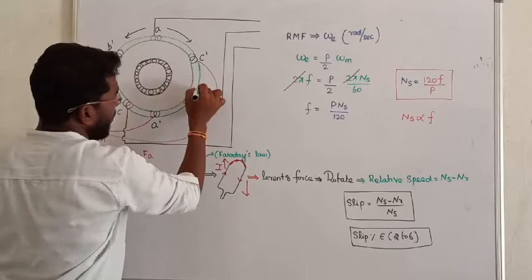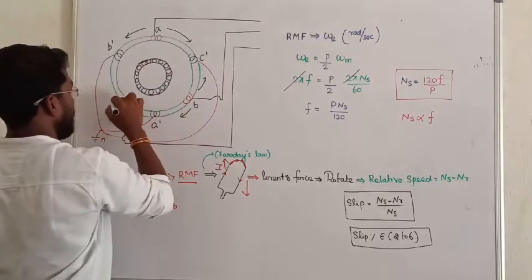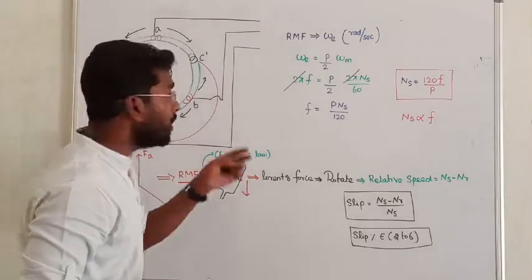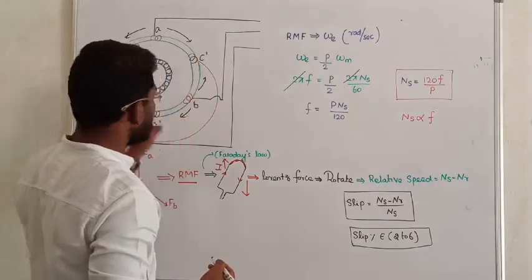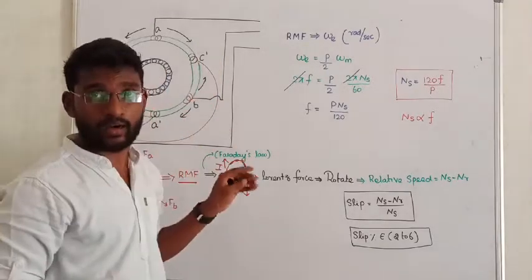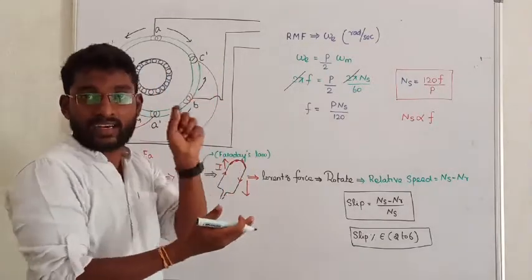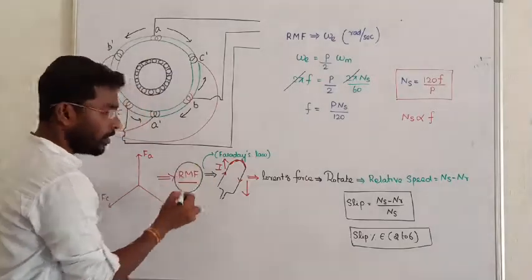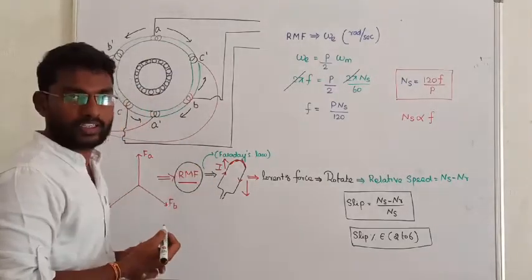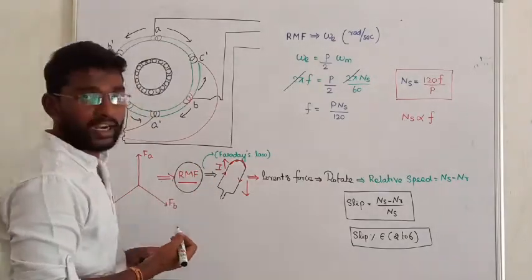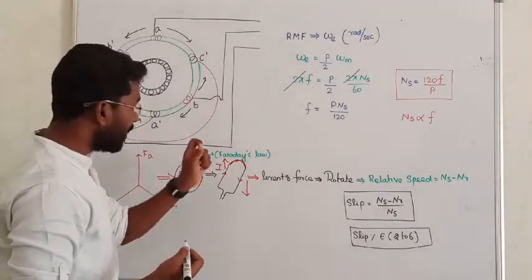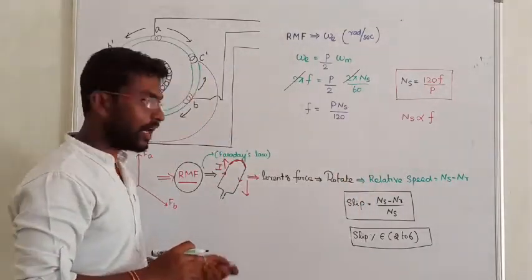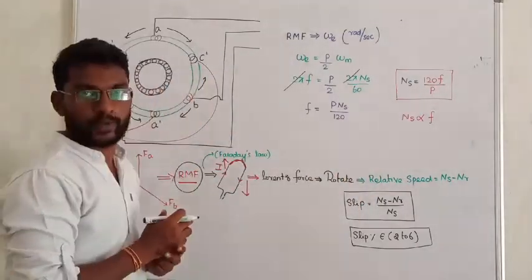This applies to all three phases. As a result, the negative forces are cancelled and the positive forces are added. The result is one unidirectional rotating magnetic field. This rotating magnetic field runs at the synchronous speed of the machine — this is called the synchronous field.